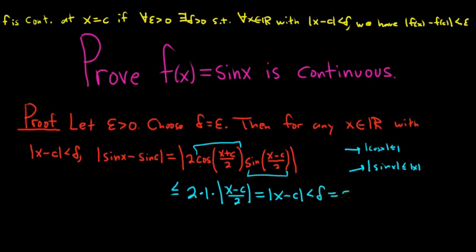But delta is equal to epsilon, and that completes the proof. So not a very difficult proof, but it does rely on this fact, and it does rely on the trig identities. I hope that made sense. Thank you.